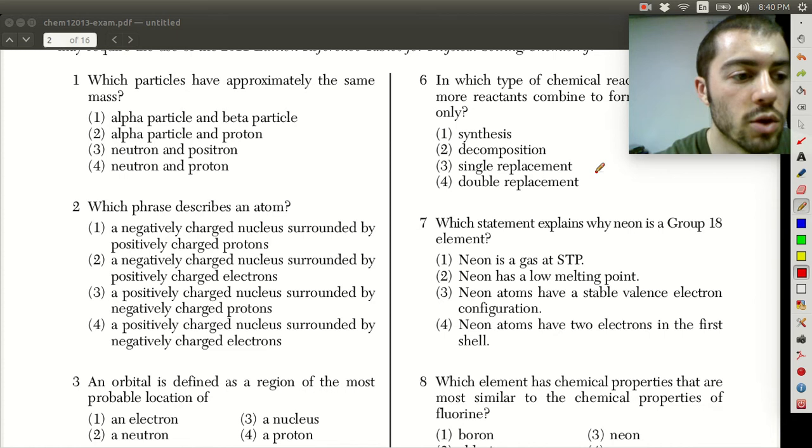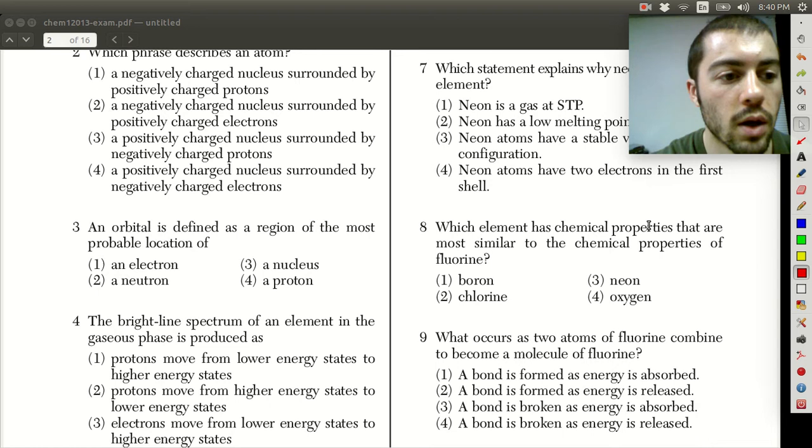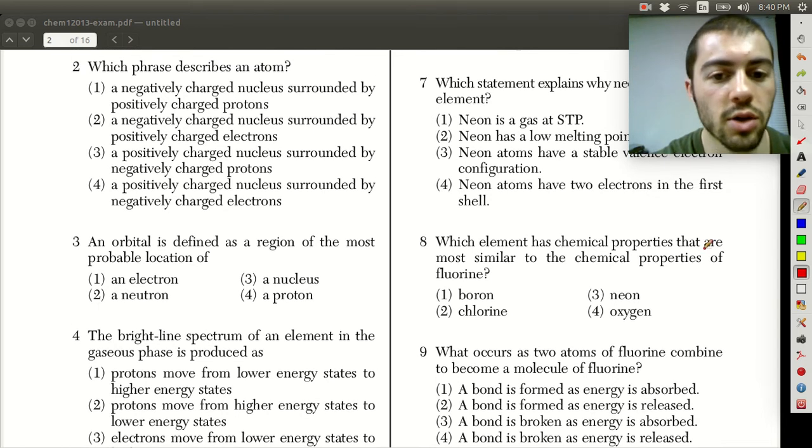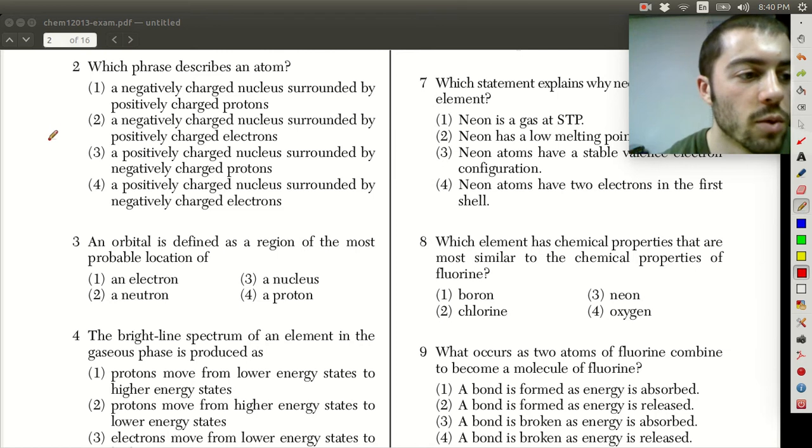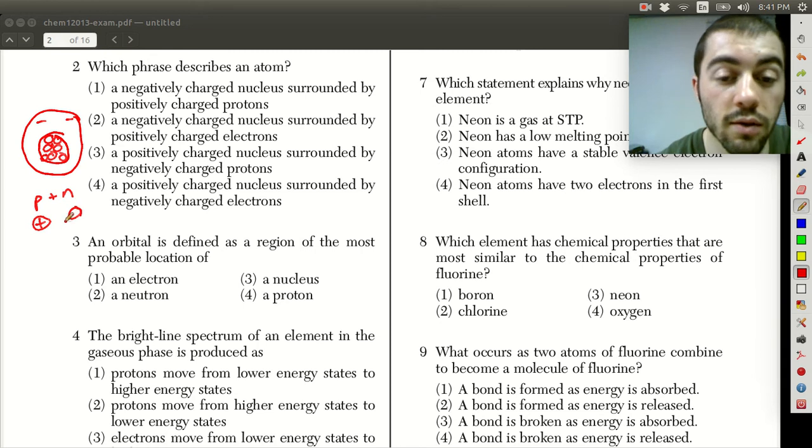Alright so if we look at number two, which phrase describes an atom? So we again talked about atomic structure at the beginning of the year, so an atom what we have is a bunch of protons and neutrons in the nucleus and they're surrounded by all of these electrons on the outside in this cloud. So basically if we look at these descriptions, a positively charged nucleus, so the nucleus is going to be positively charged because it contains protons and neutrons and protons are positively charged and neutrons are neutral, so a bunch of pluses plus zeros is going to give you something positive.